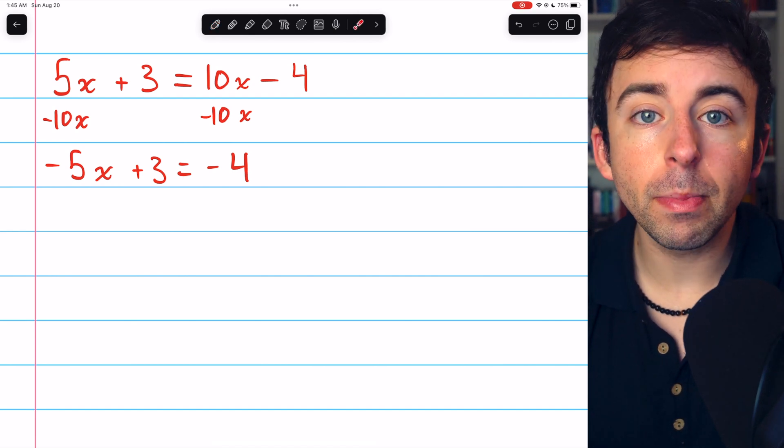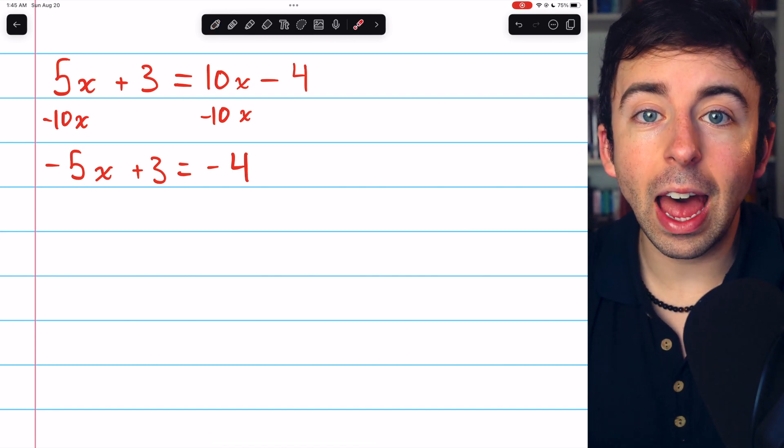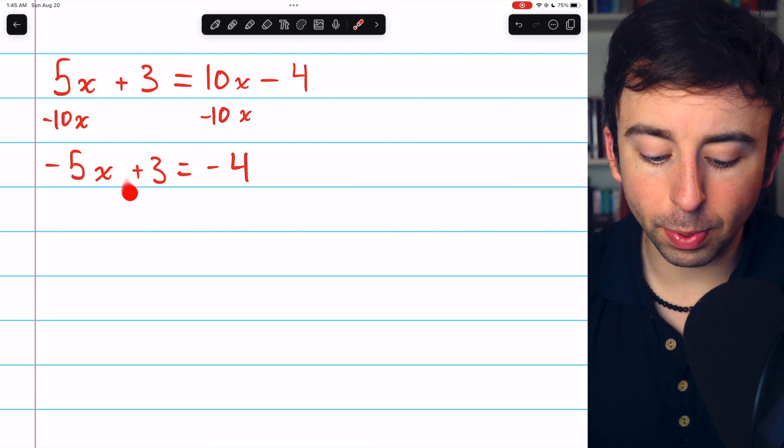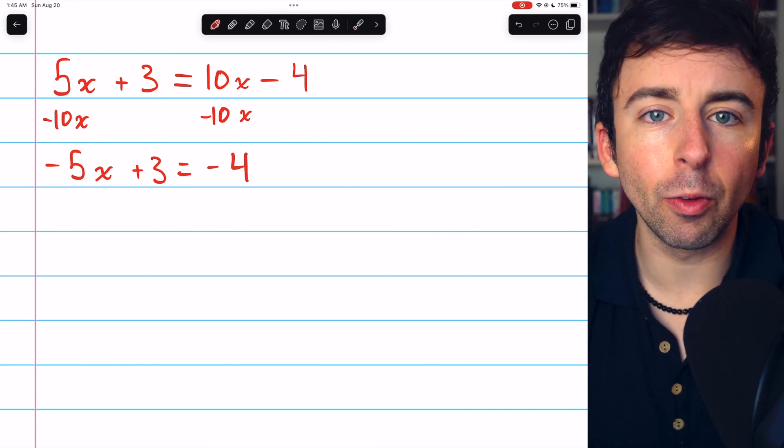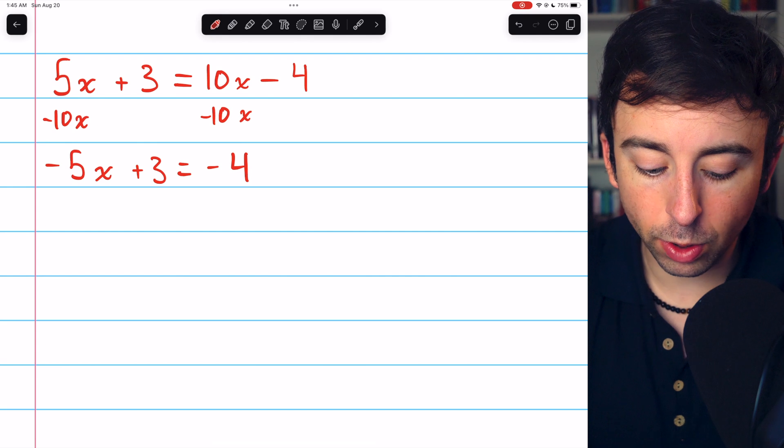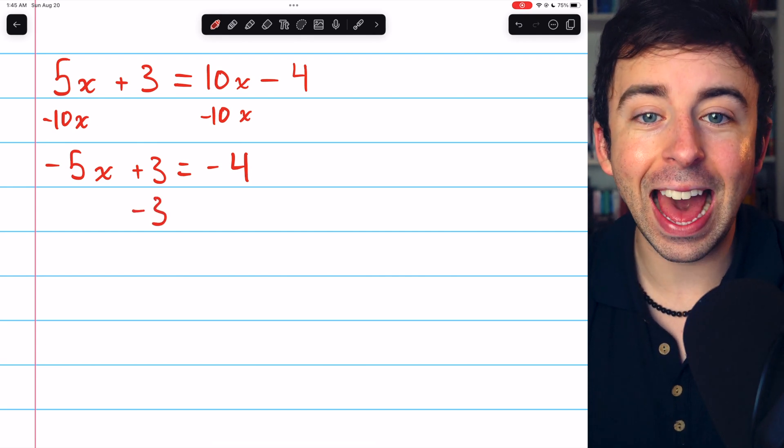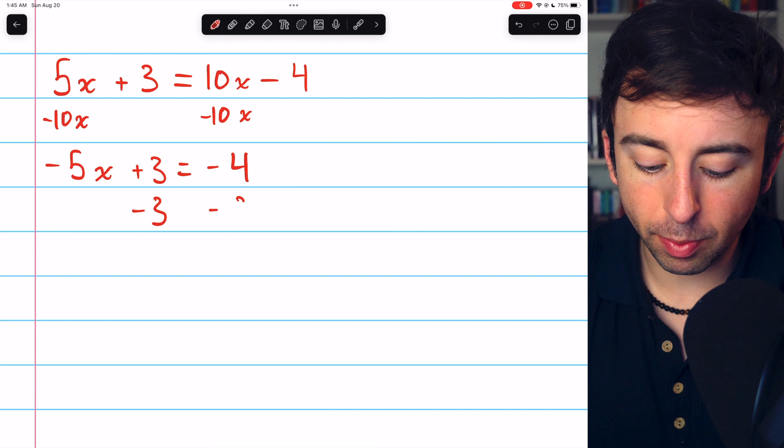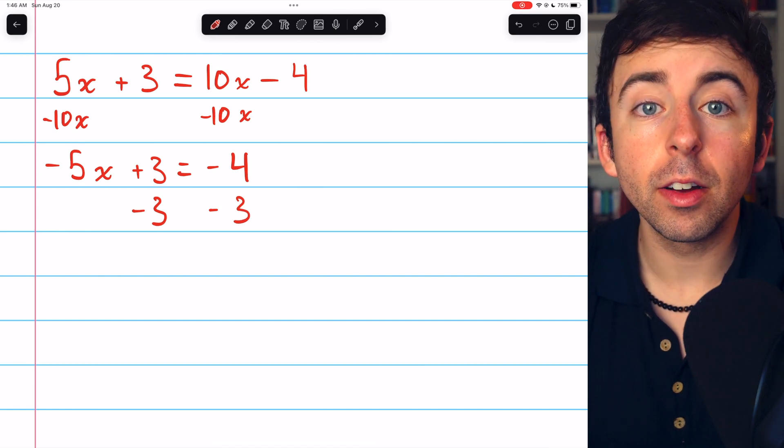Now we still don't have our variable by itself. On the same side as the variable, we have this plus 3 still, and we want to get rid of that. So to do that, we'll subtract 3. That's the opposite of adding 3. Subtract 3 from the left, and subtract 3 from the right.